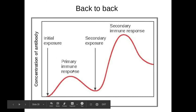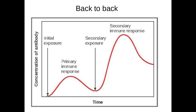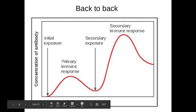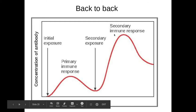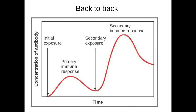The primary immune response is in response to an initial exposure of the pathogen or antigen. The second exposure is the second time that person is exposed to the pathogen or disease or antigen, and therefore generates a secondary immune response. As you can see, the secondary immune response generates a lot more antibodies — a bigger concentration of antibodies.